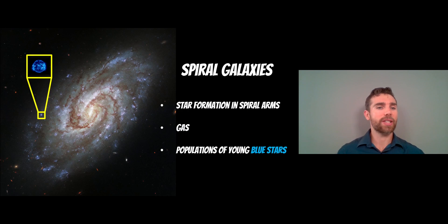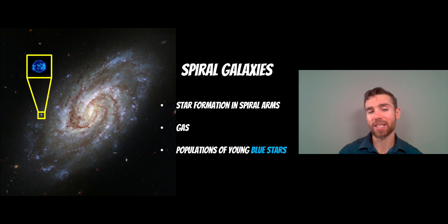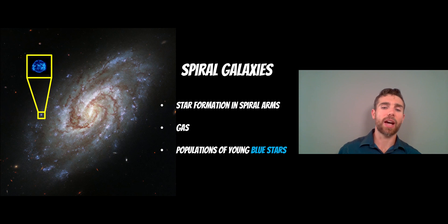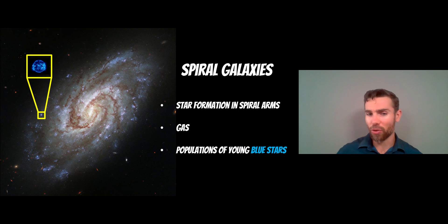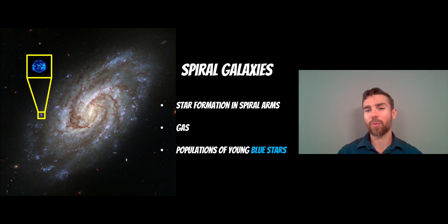For all spiral galaxies — including barred spirals and normal spirals — star formation typically occurs in the spiral arms. They have a good amount of gas content, and as they evolve that gas is depleted because it's turned into new stars. They have populations of young blue stars, and early-type spirals will have more of those and appear bluer. As a general rule, spiral galaxies are going to have ongoing star formation and bluer stars — and that applies to barred spirals as well.